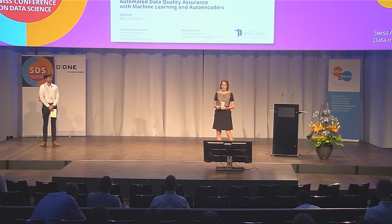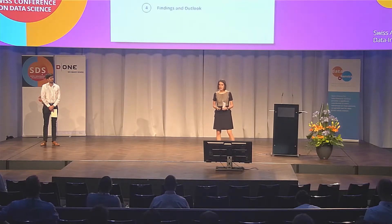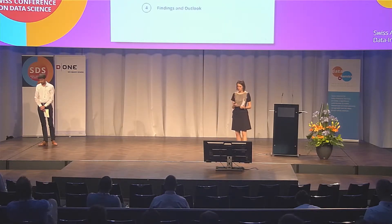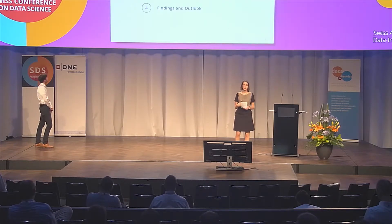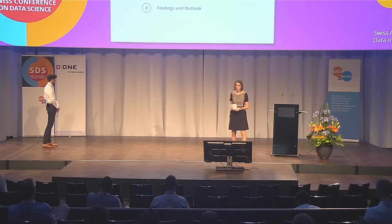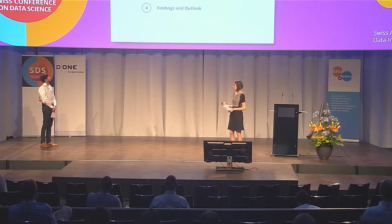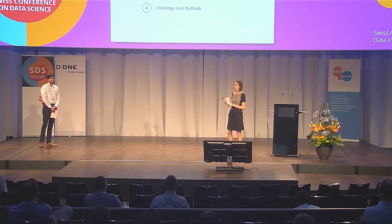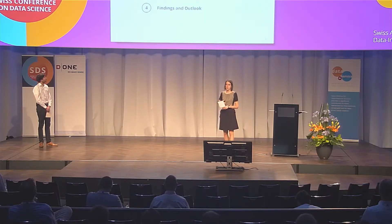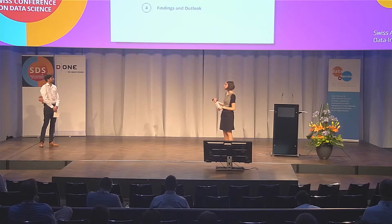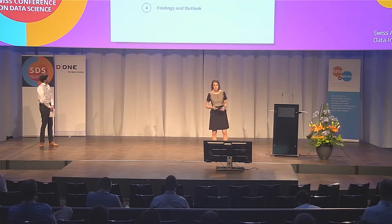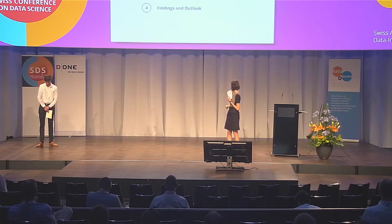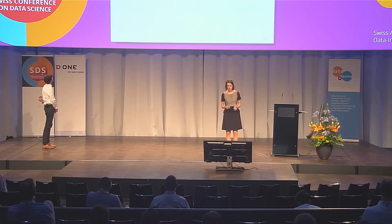To deal with data quality. Let me first give you a short overview of our talk. First, I will talk about data quality today — how it is done today and what the issues are. Then Martin will talk about how we can use autoencoders to overcome these issues, and finally he will show a demo. Then I will give you an overview of our most important findings.